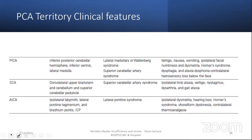The posterior inferior cerebellar artery (PICA) territory — Wallenberg syndrome — causes vertigo, nausea, vomiting, ipsilateral facial numbness, dysmetria, Horner's syndrome, dysphagia, ataxia, dysphonia, and contralateral hemisensory loss below the face, but there is no motor weakness. It involves the inferior posterior cerebellar hemisphere, inferior vermis, and lateral medulla. The superior cerebellar artery causes dorsolateral upper brainstem and cerebellar involvement (superior cerebellar artery syndrome): ipsilateral limb ataxia, vertigo, nystagmus, dysarthria, and gait ataxia. The anterior inferior cerebellar artery (AICA) causes lateral pontine syndrome: ipsilateral dysmetria, hearing loss, Horner's syndrome, and periform dyskinesias, with contralateral thermoanalgesia.